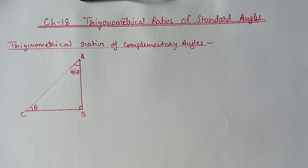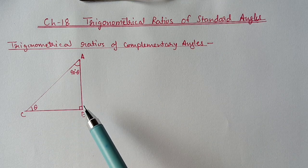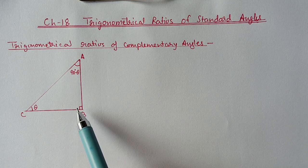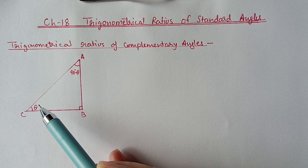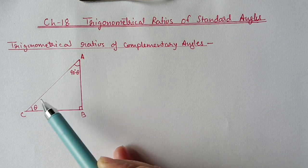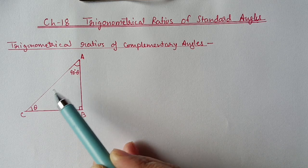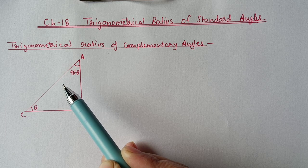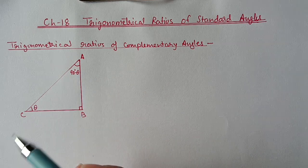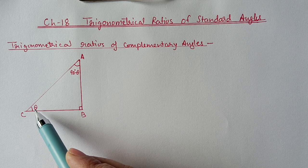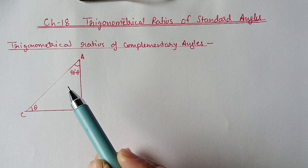In a right angle triangle we have a total of three angles. One angle is 90 degrees, so the sum of the remaining two angles will be 90 degrees, because the total sum of three angles is 180. If one is 90, then the rest two sum will be 90, which means these two angles are complementary to each other. If angle C is θ degrees, then angle A will be 90 minus θ.